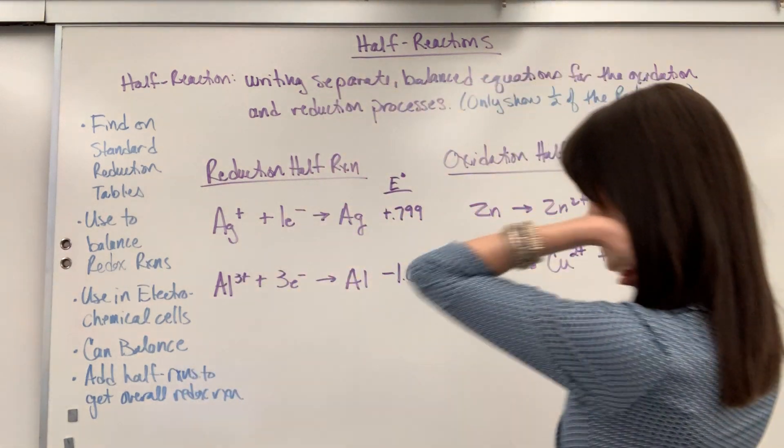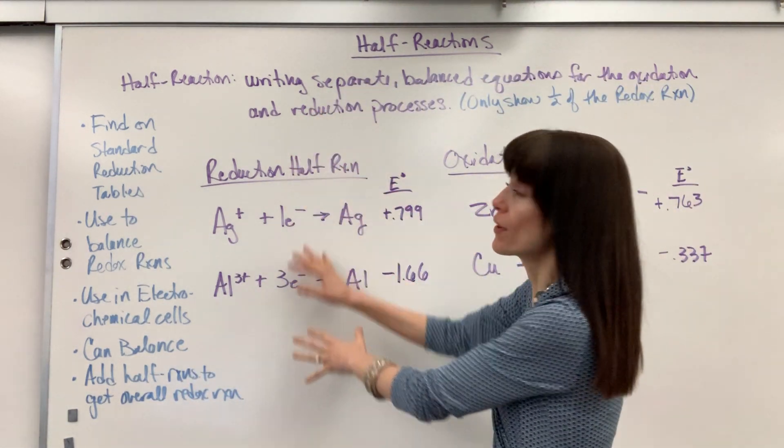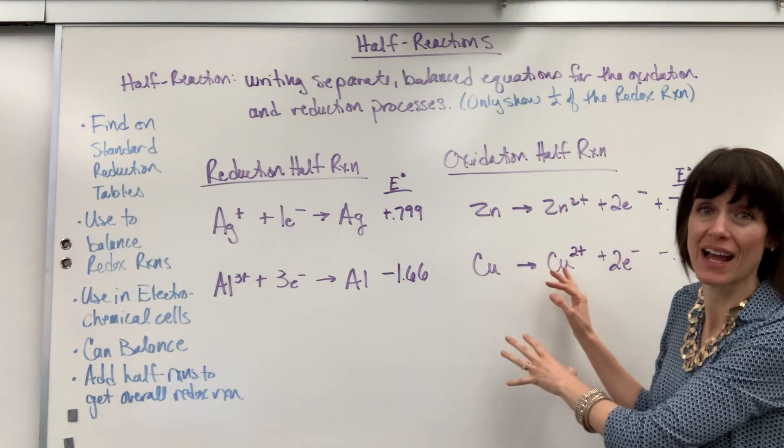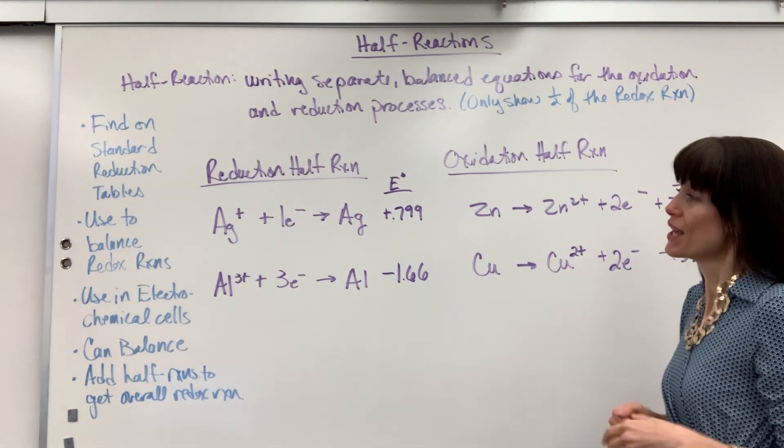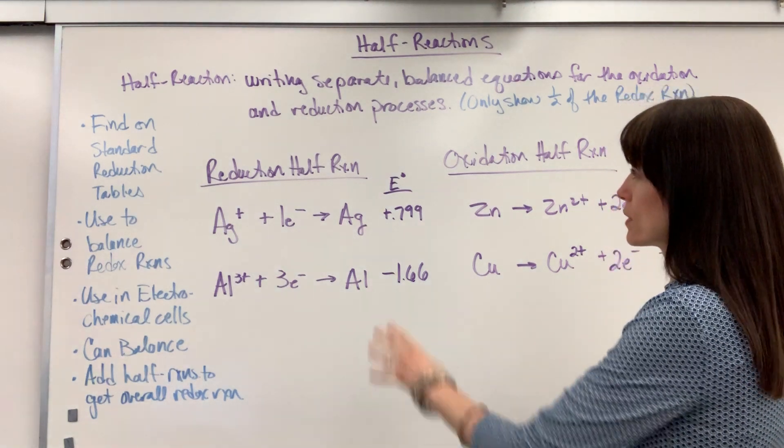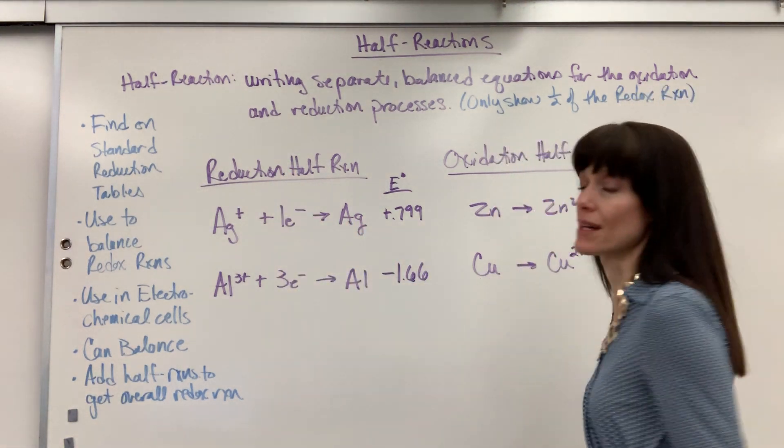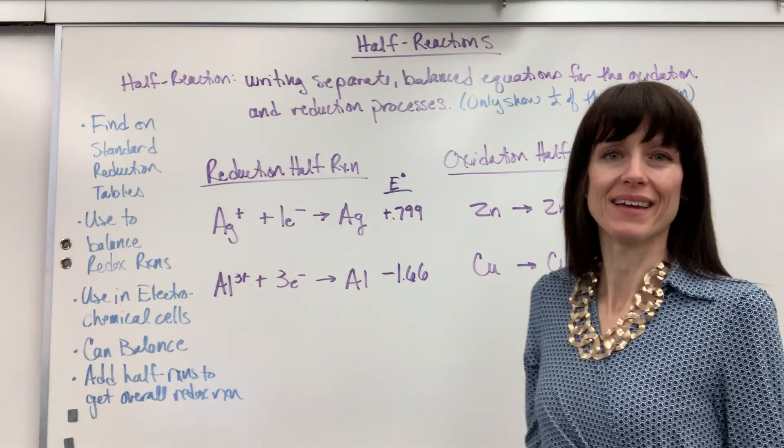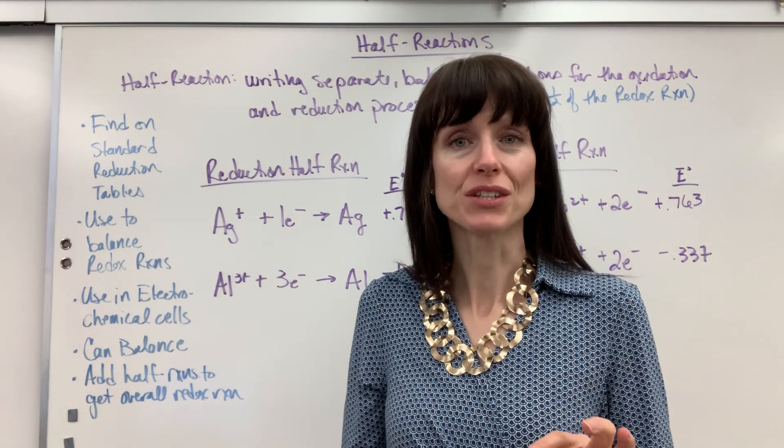So I have some examples here for you. Here we have reduction half reactions, and on this side I have oxidation half reactions. I want you to notice first thing where the electrons are written. For the reduction half reactions, we have electrons on the reactant side. Why is that? Reduction, GER, gain electrons, reduction.